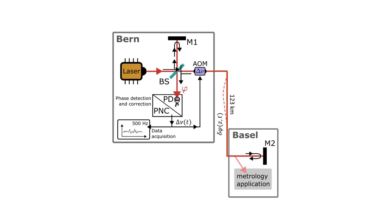Phase-stabilized optical fiber networks find extensive application in the transmission of precise and stable optical frequencies between different locations. With the help of active phase noise cancellation, mechanical or thermal disturbances along the fiber can instantaneously be removed with a compensation frequency. Normally the signal is only stored for health monitoring of the system or discarded entirely.